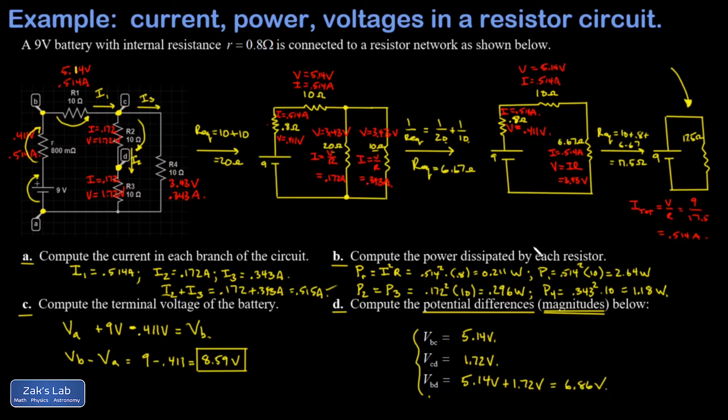So you should be able to wire this up on a breadboard and then put the probes of the multimeter at node B and node D, and it will read 6.86 volts, plus or minus depending on the order that you hook the probes up in.